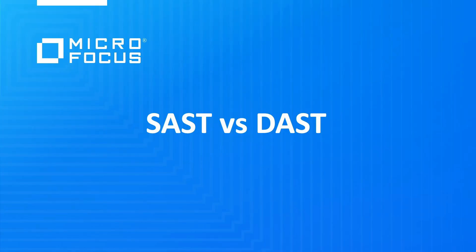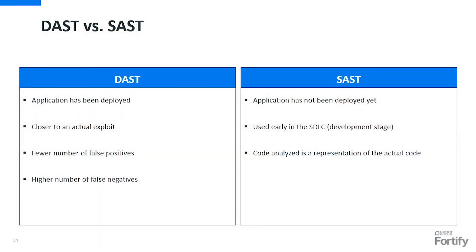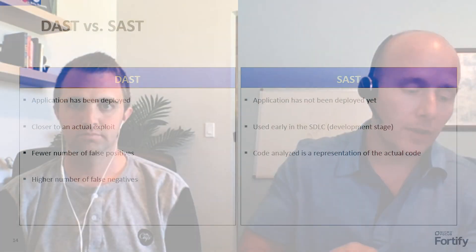You touched a little on SAST and DAST and the differences between the two. Maybe you could dive into that a bit more and touch on the differences, but also how they complement each other. Static application security testing is focused on source code. What happens there is we pull in source code, translate it to an intermediate model that flattens it out and makes all different languages look like a similar structure. Then we apply rules to identify vulnerabilities in that source code — tracing data flow to identify things like cross-site scripting or SQL injection or any of the thousands of vulnerabilities we're able to detect.